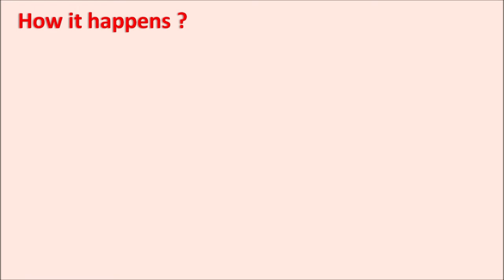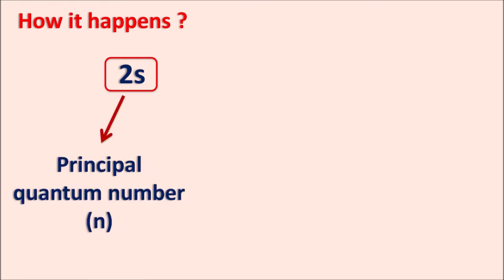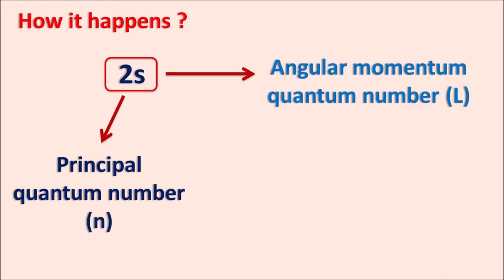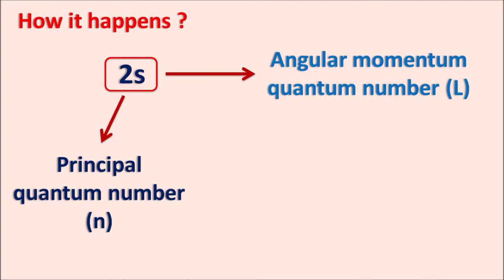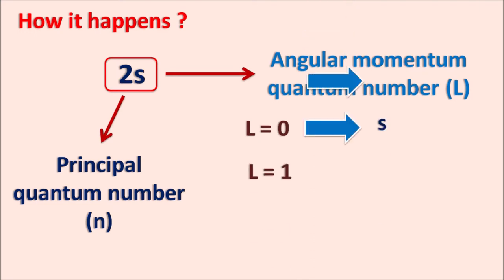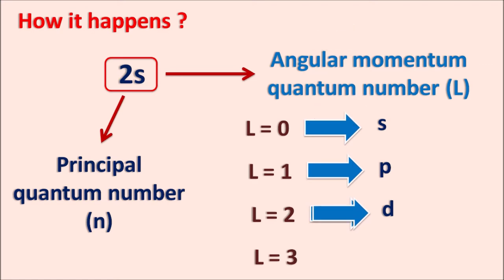To understand how this happens, let us discuss two types of quantum numbers. Consider the 2s orbital — the '2' indicates the principal quantum number, which indicates the number of the orbit. The 's' indicates the s orbital, which is represented by the angular momentum quantum number L. Each orbital has a different L value: if L equals 0 it is the s orbital, L equals 1 is the p orbital, L equals 2 is the d orbital, and L equals 3 is the f orbital.